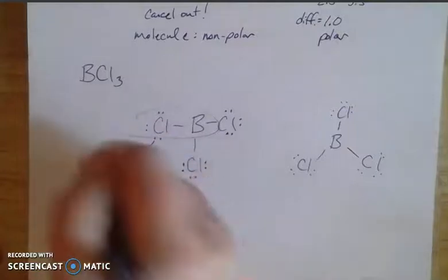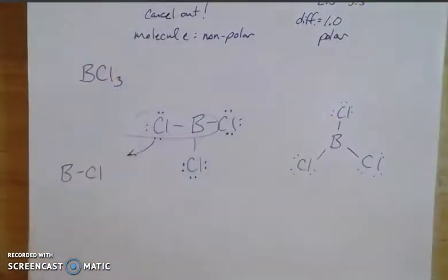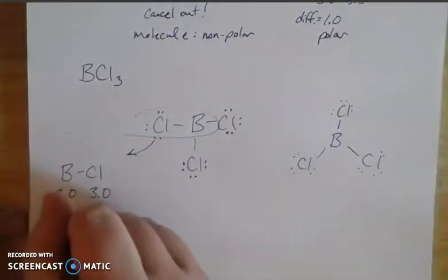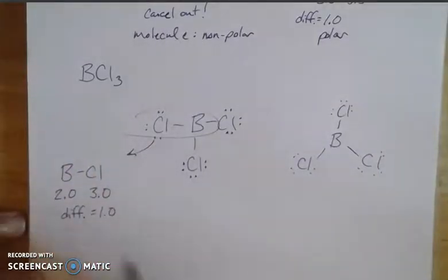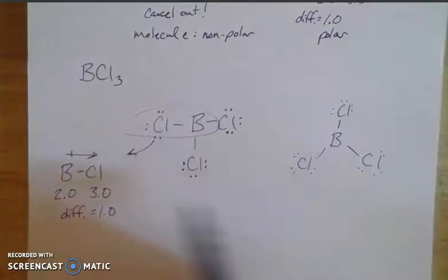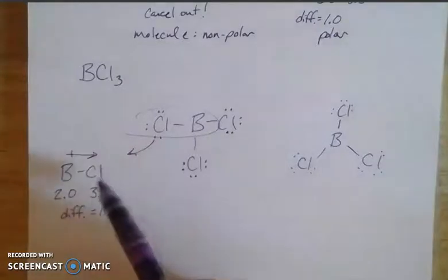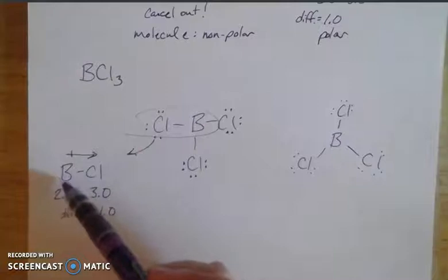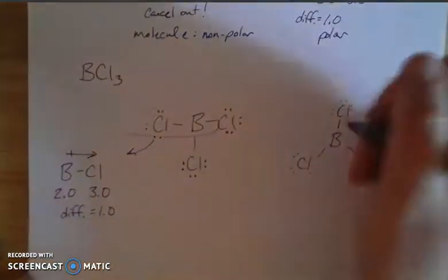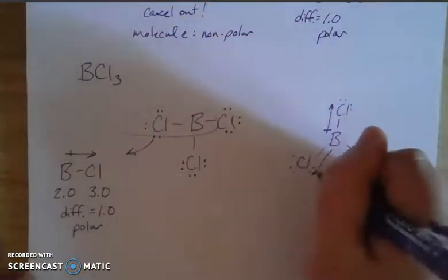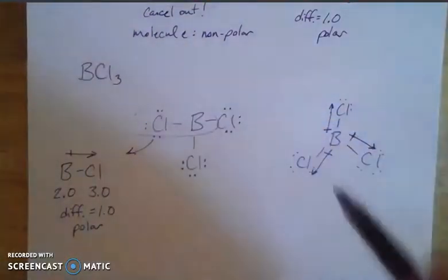Looking at the boron-to-chlorine bond, boron is 2.0 and chlorine is 3.0, so the difference is 1.0 — just like carbon dioxide — making it a polar bond. The dipole points toward the more electronegative chlorine, which makes sense since halogens are highly electronegative. Electronegativity increases left to right and bottom to top on the periodic table, with fluorine as the most electronegative element. When we put all three dipoles back into the trigonal planar geometry at 120 degree angles, all the arrows point in different directions.